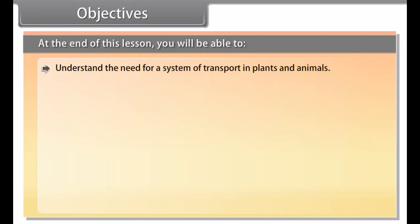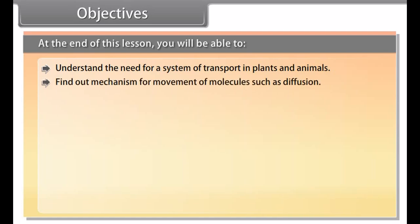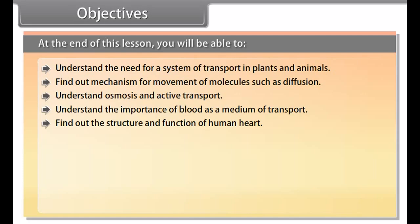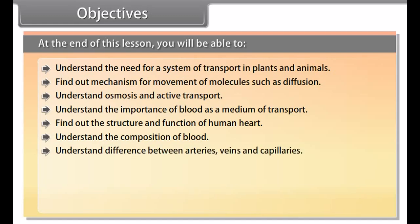At the end of this lesson, you will be able to understand the need for a system of transport in plants and animals, find out the mechanism for movement of molecules such as diffusion, understand osmosis and active transport, understand the importance of blood as a medium of transport, find out the structure and function of the human heart, and understand the composition of blood and the difference between arteries, veins and capillaries.